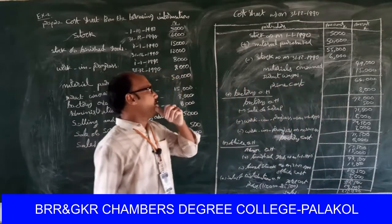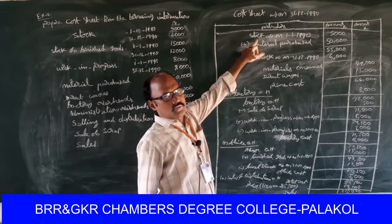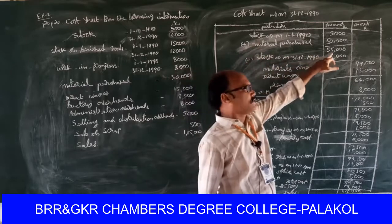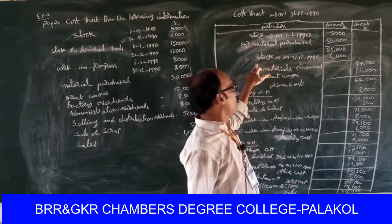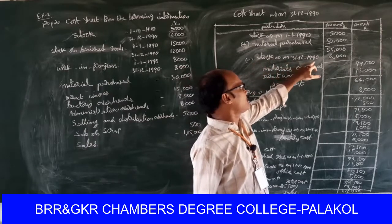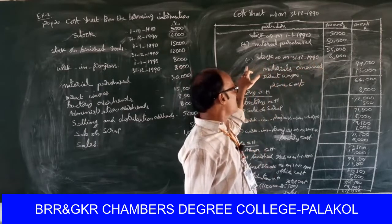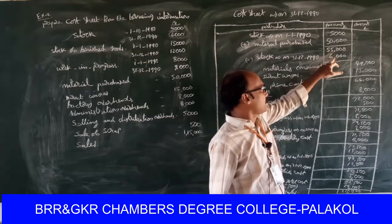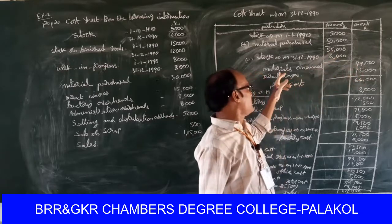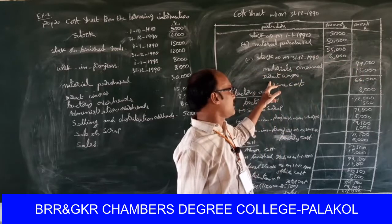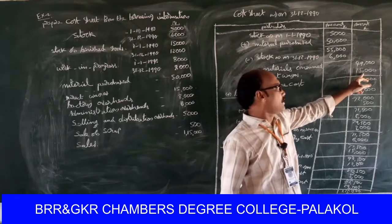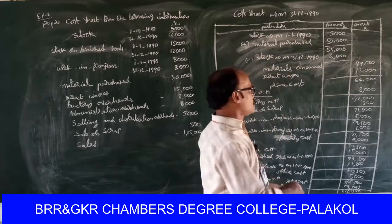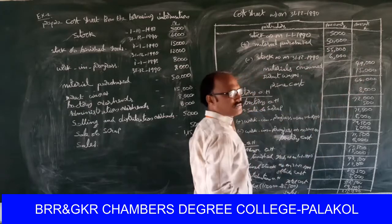Let's review once again. Opening stock of raw materials, add materials purchased fifty-five thousand, less closing stock six thousand equals forty-nine thousand materials consumed. Add direct wages fifteen thousand — total prime cost is sixty-four thousand. All direct expenditures are recorded under the head of prime cost.